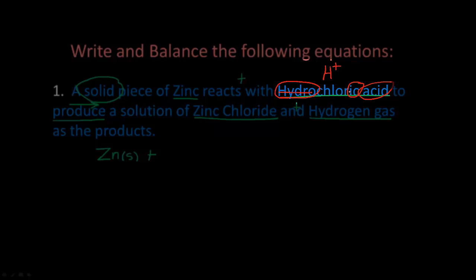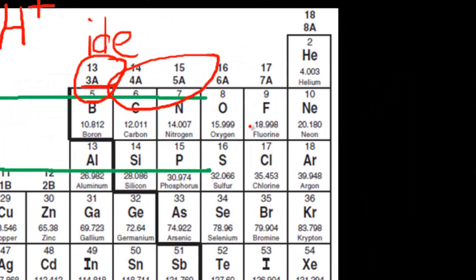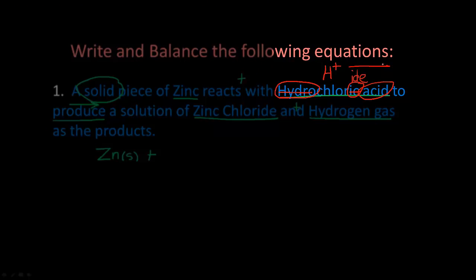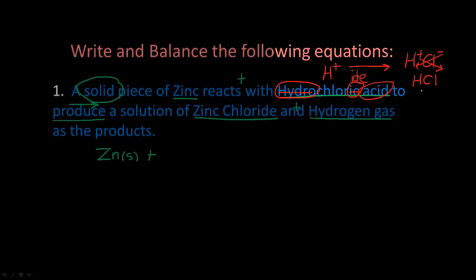We take off the 'hydro,' change 'ic' to 'ide,' and we have chloride. Chlorine is Cl, in group 17, which means it has seven valence electrons, so its oxidation number is minus one — it's easier to gain one electron than lose seven. So we have H⁺ and Cl⁻; cross them down to get HCl. We never write ones, so that is our formula for hydrochloric acid.